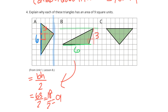As I look towards triangle C, we have a base of 6. When I look to sketch in a height, it's going to be somewhere along that yellow line, and that height is going to once again be 3 units. So that too has a base of 6 and a height of 3, which will result in an area for the triangle of 9 square units.